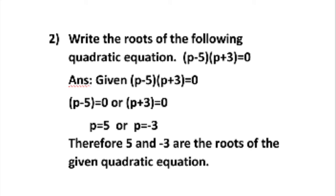Question number 2: write the roots of the following quadratic equation. To find the roots, you have to solve the equation. The given equation is P minus 5 multiplied by P plus 3 equal to 0. You can split it into two parts: P minus 5 equal to 0 or P plus 3 equal to 0. From the first part you get P equal to 5, and from the second part you get P equal to minus 3. Therefore, 5 and minus 3 are the roots of the given quadratic equation.